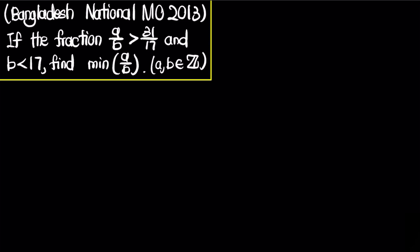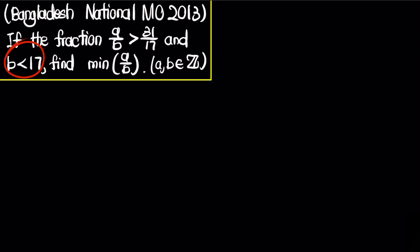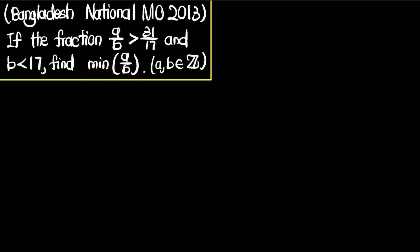Let's solve a problem from the Bangladesh National Mathematical Olympiad 2013. The problem states that if the fraction a over b is bigger than 31 over 17, and we have the condition that b is less than 17, we have to find the minimum value of a over b. Here, we will assume a and b to be positive integers.